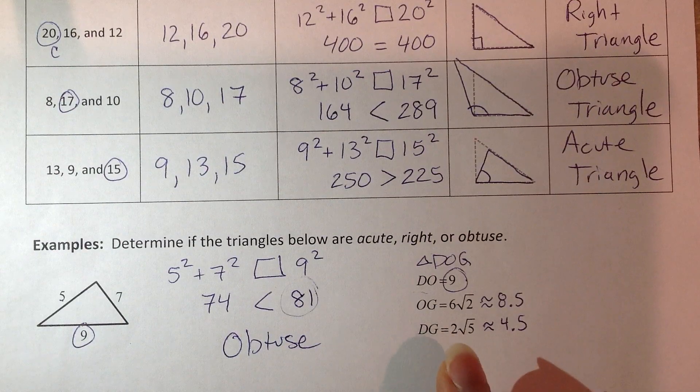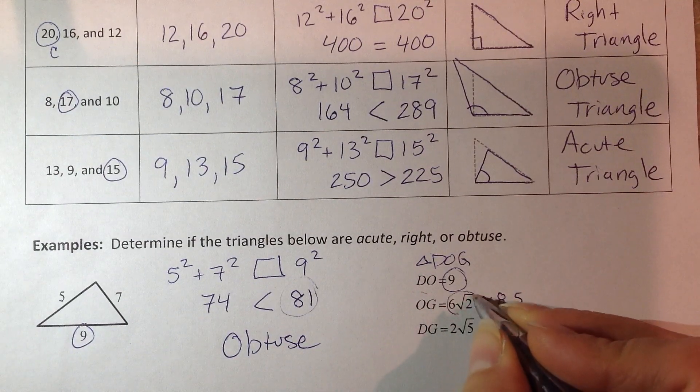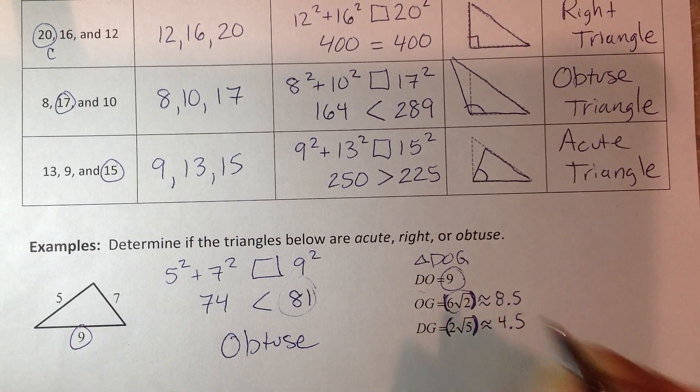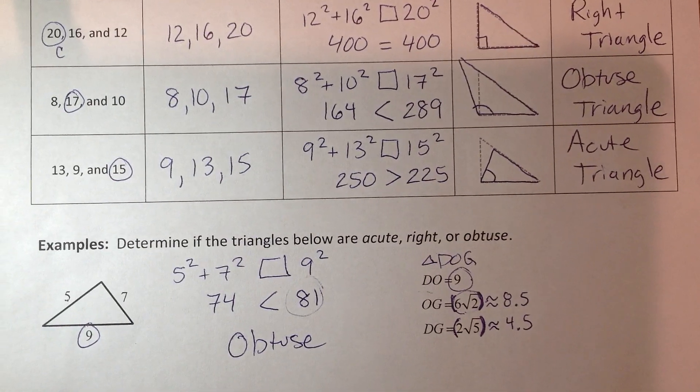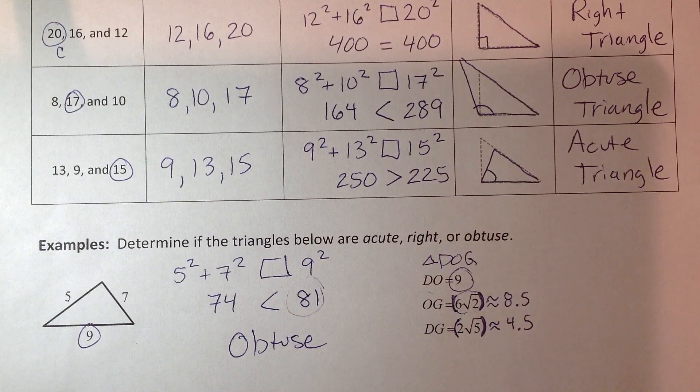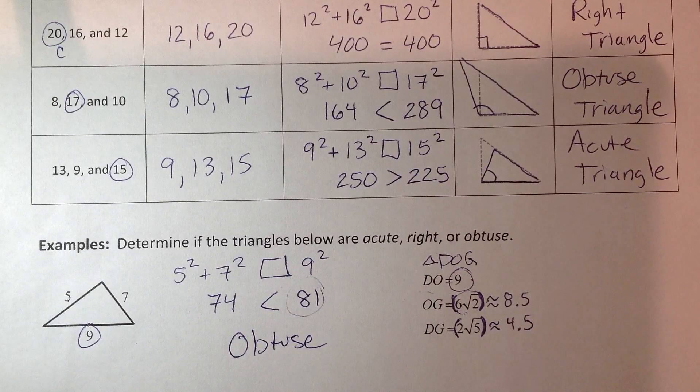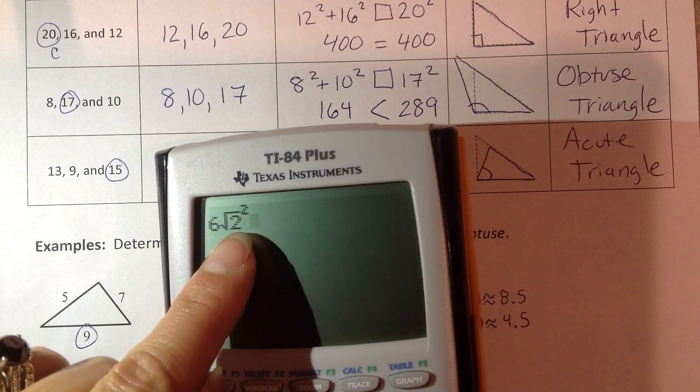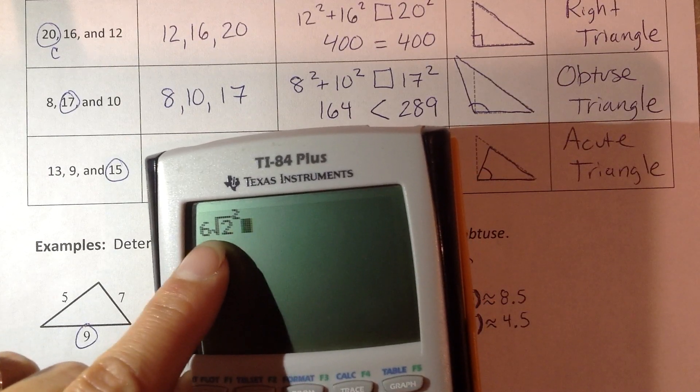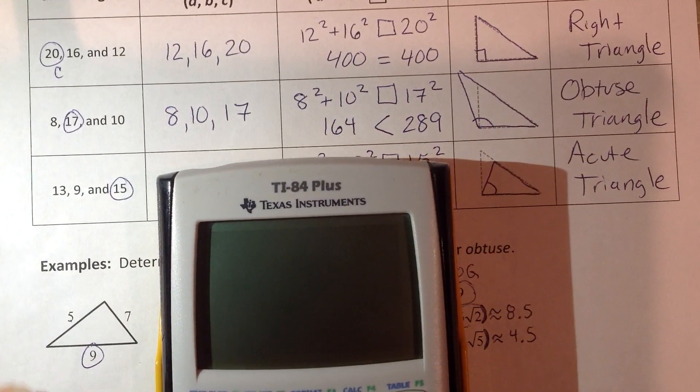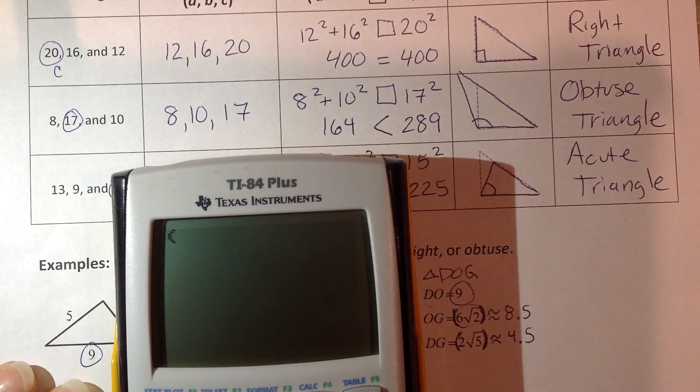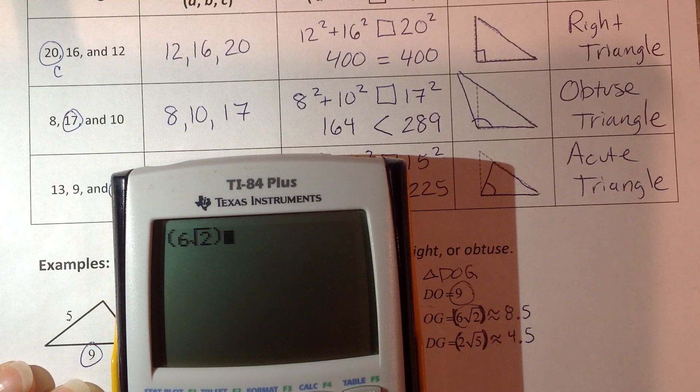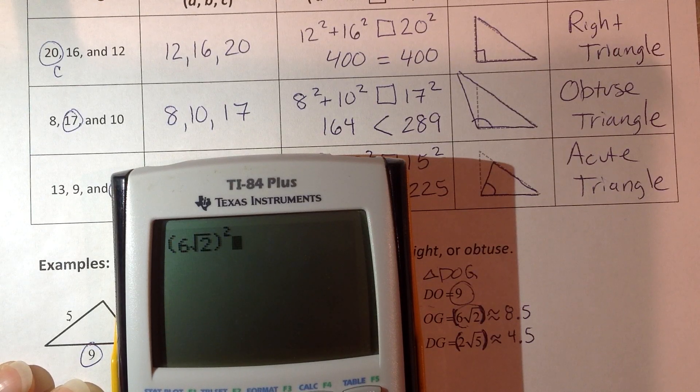Now when I go to do this one in the calculator, you need to be really careful because this whole thing needs to be squared. We need parentheses around that. You're going to put in your 6 square root of 2. You're going to get out of the square root. And you're going to close that parentheses. So now we're going to square that whole thing.